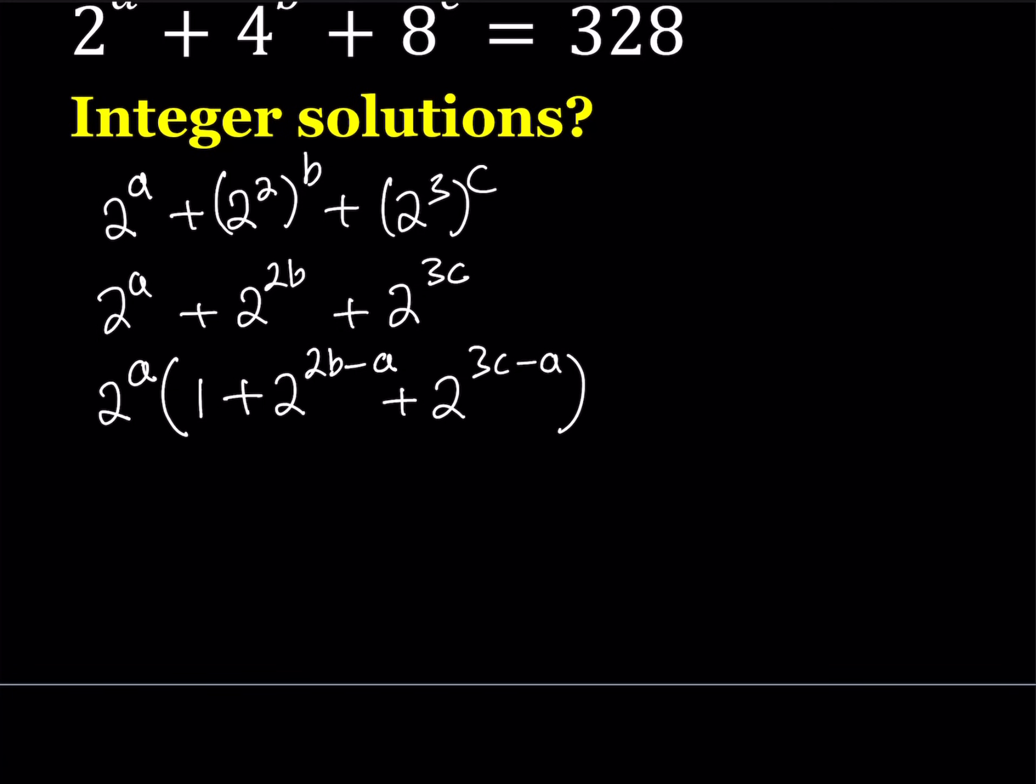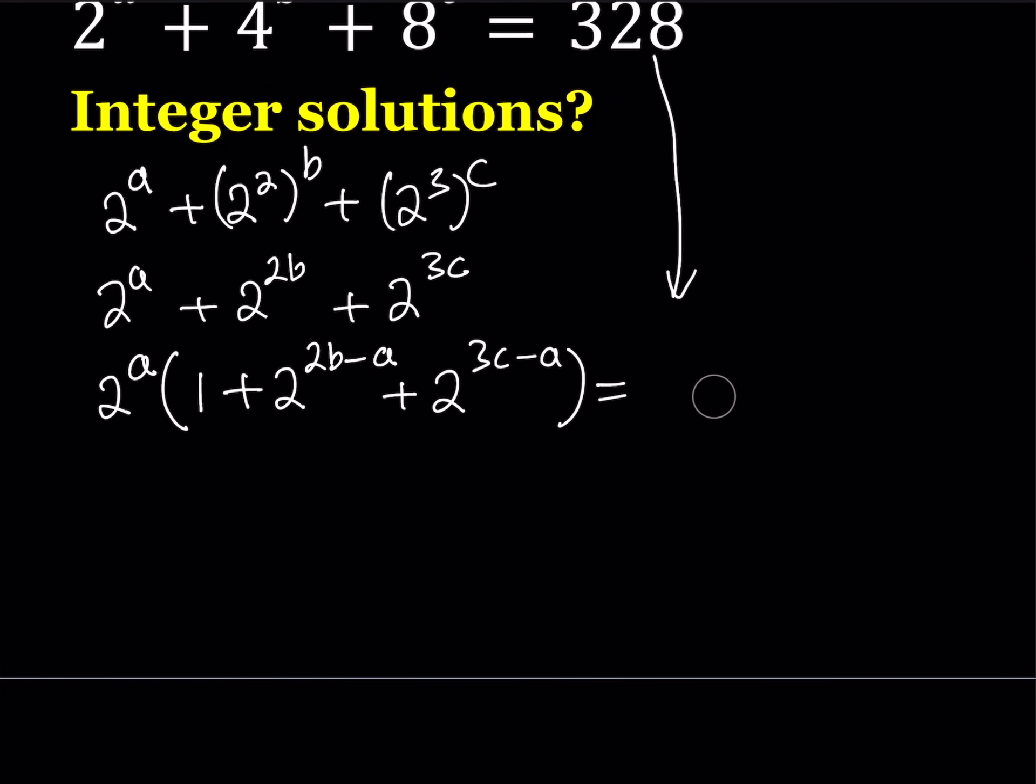Notice that I made an assumption that 2b minus a is going to be positive, which means 2b is greater than or equal to a. If that doesn't work, we're going to get a fraction and things will be messed up. But you'll see that it's going to work. So this equals 328, and I can factor 328 as well. Let's factor it and write it that way.